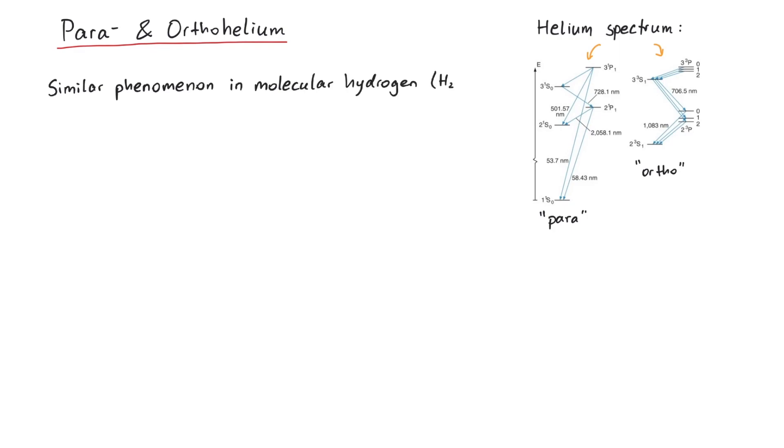Molecular hydrogen consists of two protons and two electrons. These two forms, paramolecular hydrogen and orthomolecular hydrogen, were first proposed by Heisenberg and Hund in 1927.